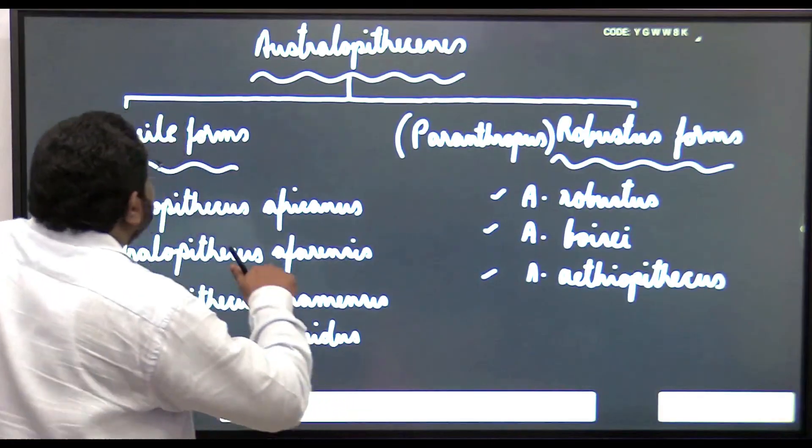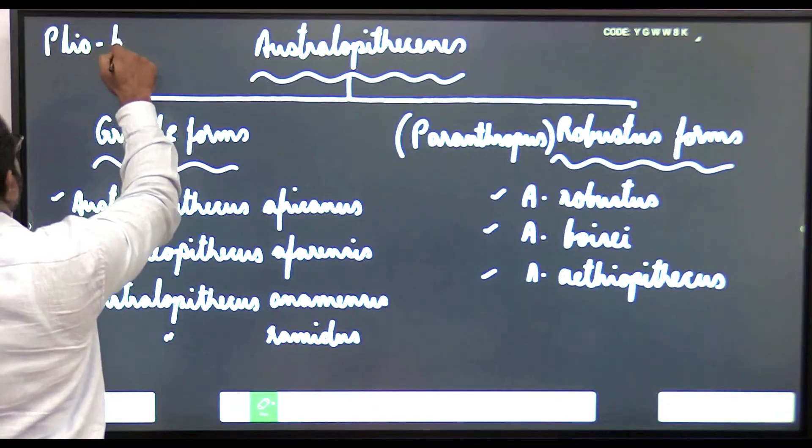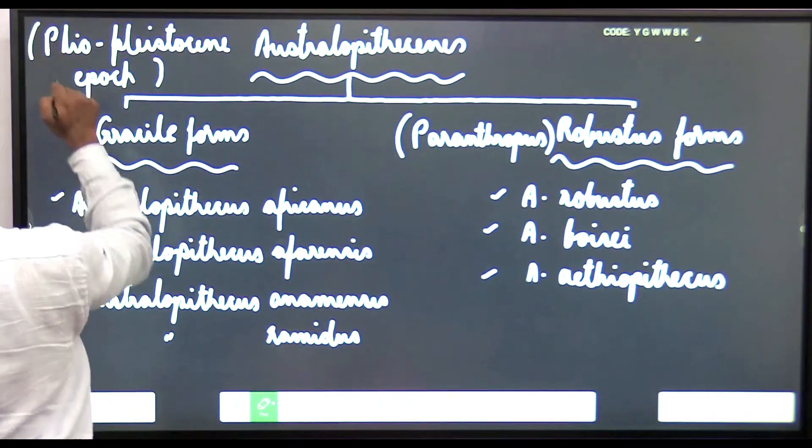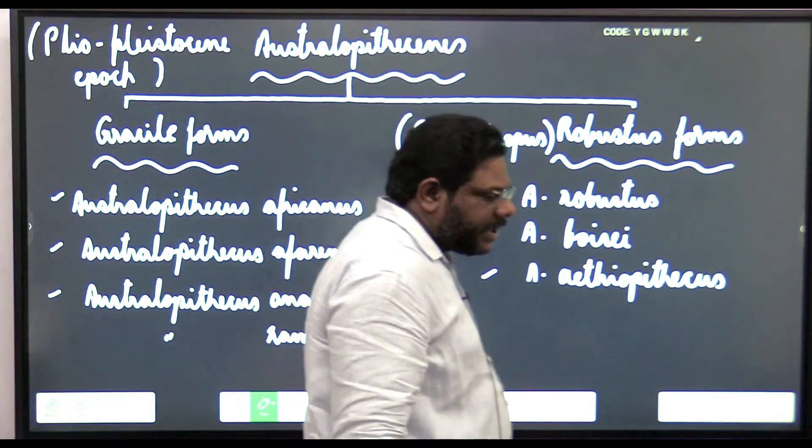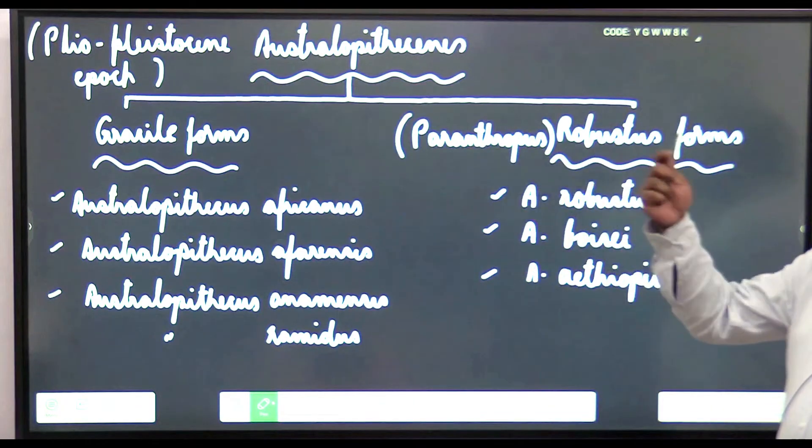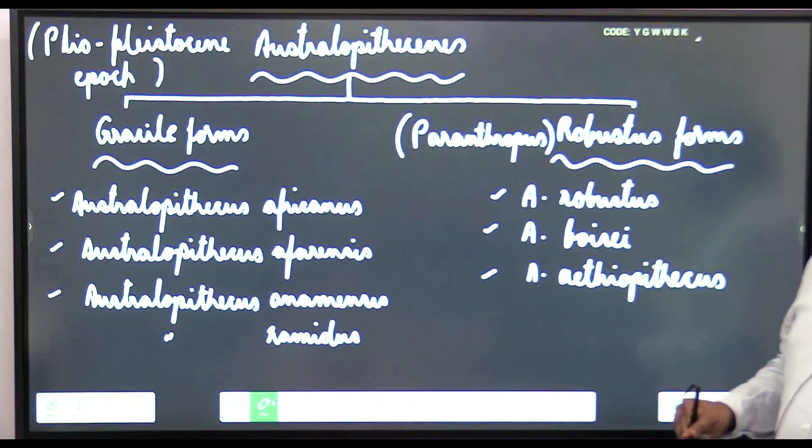All these australopithecines belong to Plio-Pleistocene. They originated in Pliocene and survived during Pleistocene epochs, and that is why they are known as Plio-Pleistocene fossils.